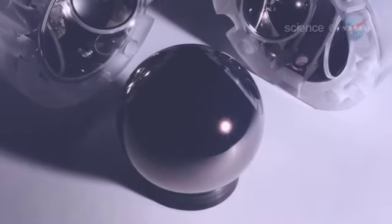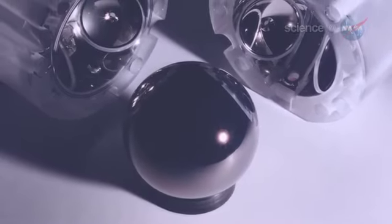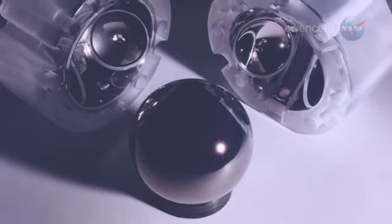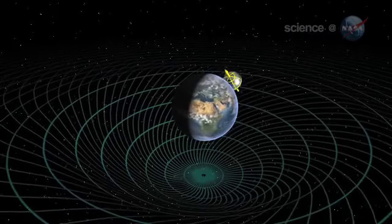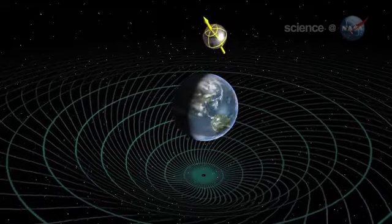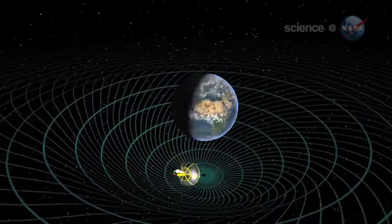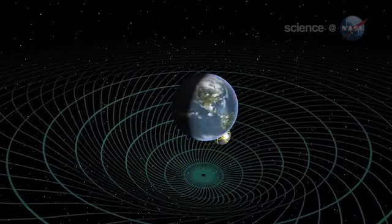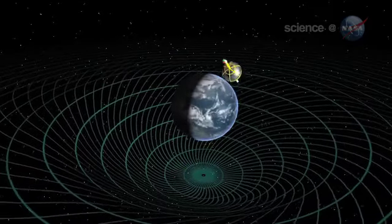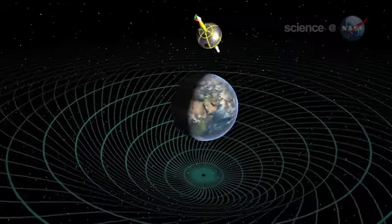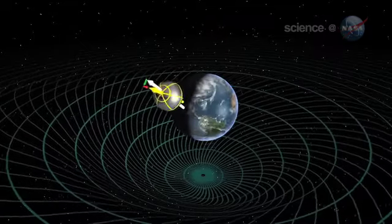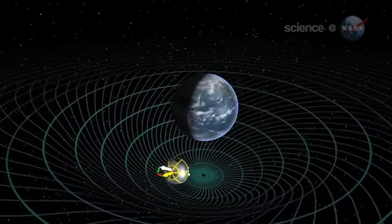Gravity Probe B carried some superspherical gyros into Earth's orbit to see what they would do. In practice, this simple idea is extremely difficult. According to calculations, the twisted spacetime around Earth should cause the axis of the gyros to drift by a tiny amount, really tiny. It's like measuring the thickness of a sheet of paper held edge-on 100 miles away.